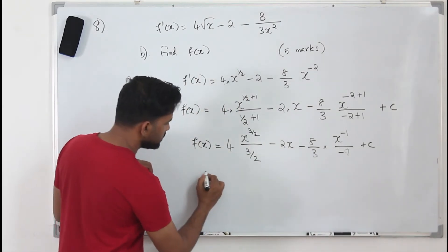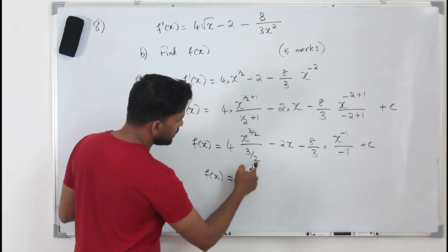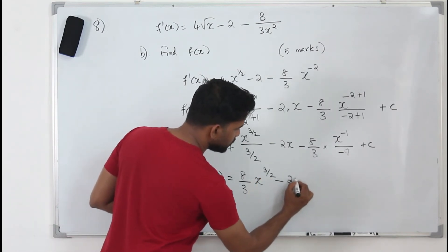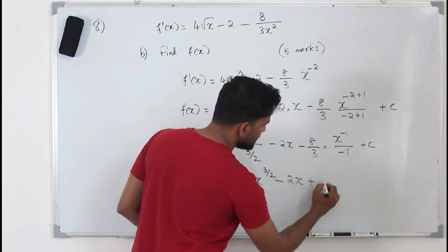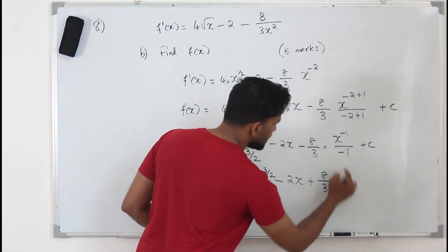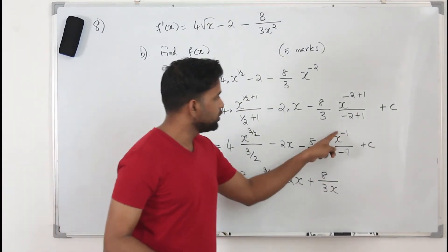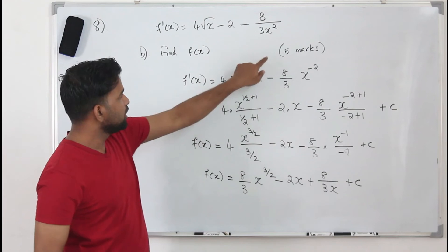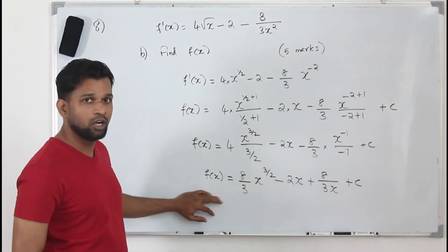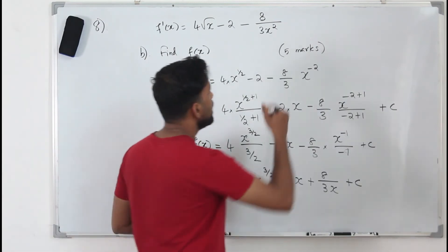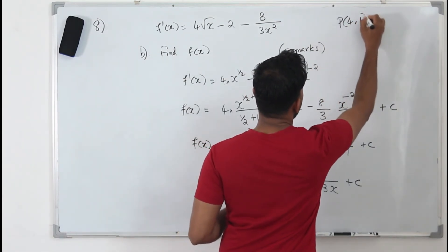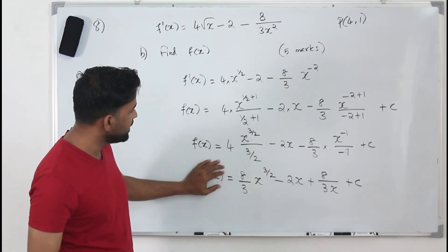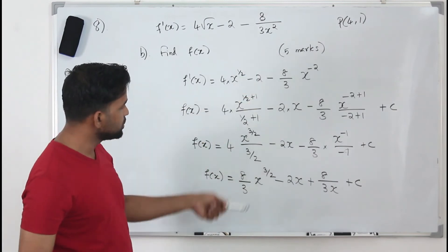Simplifying further: our f(x) is 8 over 3 times x to the power 3/2, minus 2x, plus 8 over 3x — because the two negatives cancel and x to the power negative 1 brought to the denominator becomes 1 over x. But since the question is worth 5 marks, this is not the complete answer — you need to find c. You are given a point on the curve, which is (4,1), so substitute the point here.